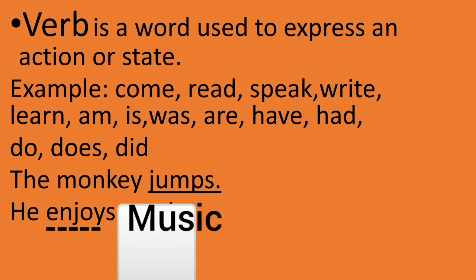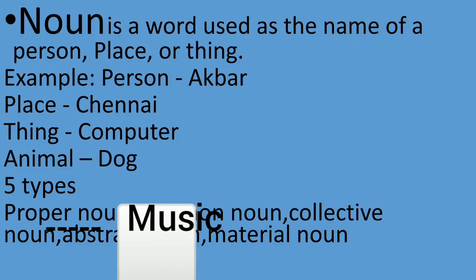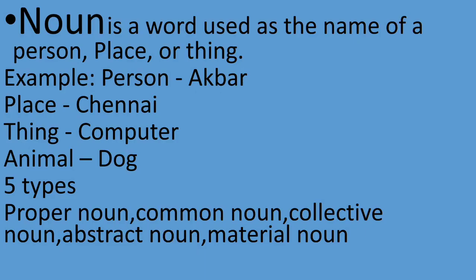And the next one is nouns. Noun is a word used as the name of a person, place, or thing. For example, person — Akbar, that means the name of a person, this is a proper noun. Place, computer, animal, dog. Nouns — there are five types. They are proper noun, common noun, collective noun, abstract noun, and material noun.